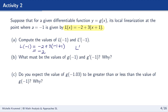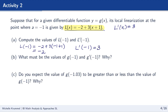Now what is l prime of negative 1? This is a linear equation with slope 3, so l prime of x equals 3. If we substitute negative 1 into l prime of x, we get 3 — it doesn't have an x in it so it's always equal to 3, which makes sense because it's a linear function with constant slope.